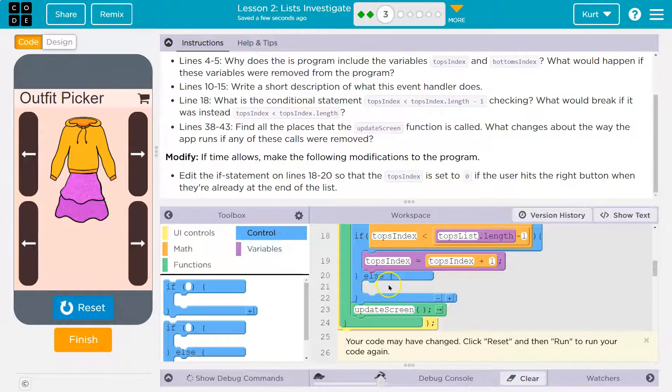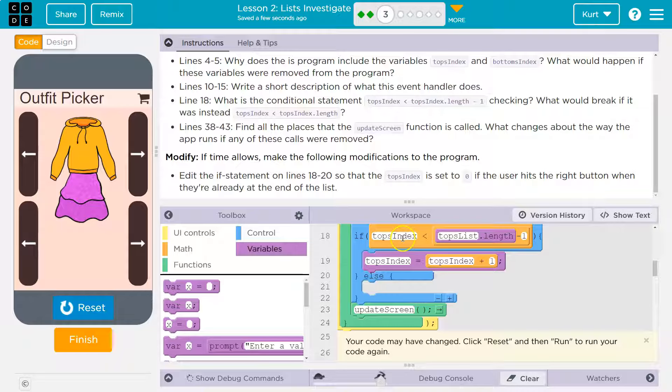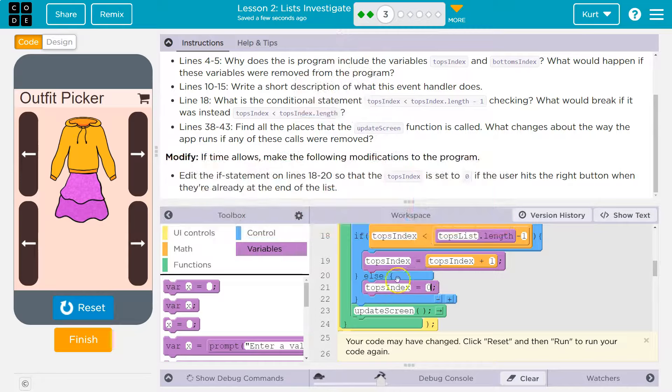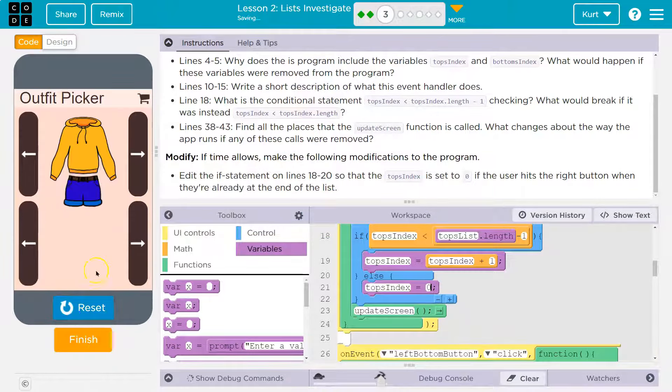All right. And to do that, I added an else because if top index is no longer less than list minus one, I'm going to go ahead and make top index equal to zero. I'm going to make it restart. And that way it should go back around forever. Crazy. Cool. Let's keep going.